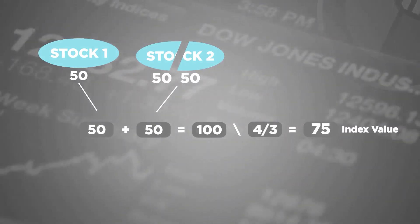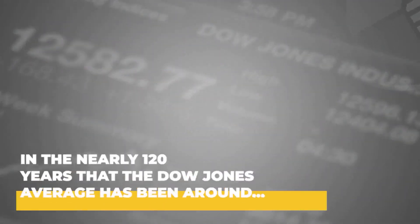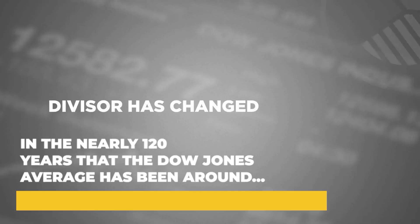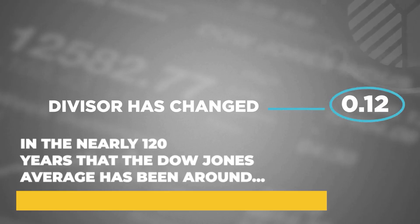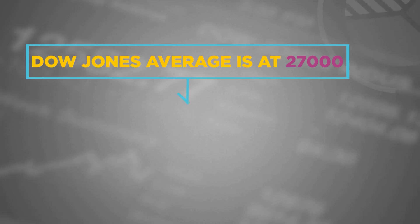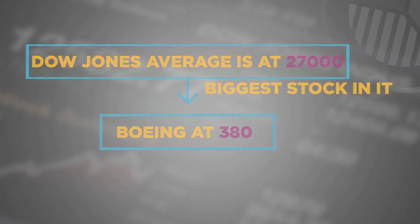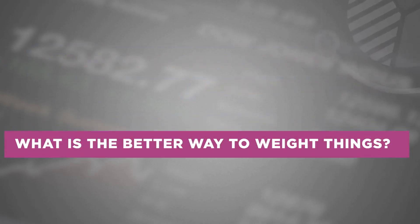This takes us back to the question of how you should build an index. The divisor has had to be changed so many times that its current value is around 0.12. This is why you see things like the Dow Jones average being at 27,000 when the stock with the largest price — Boeing — is at 380. Some barometer this turns out to be. I wonder why people even bother to look at the Dow Jones averages at all. If price-weighting doesn't work, what is a better way to weight things?